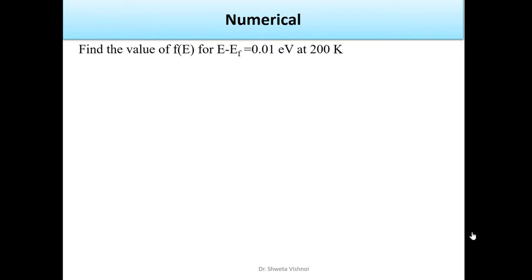Find the value of f(E) for E minus Ef given by 0.01 eV at 200 Kelvin. This is a question on the Fermi-Dirac probability distribution function. If you know the Fermi-Dirac function, the value will be formula-based and can be computed directly from the given values.